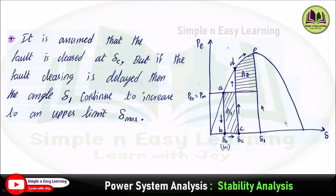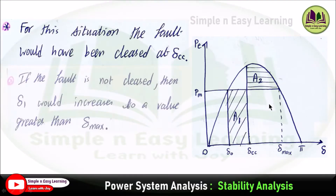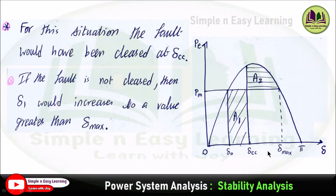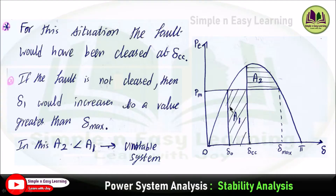If the fault clearing is delayed, the angle del_1 continues to increase to an upper limit called del_max. This means area A2 is increasing and the system becomes unstable. The fault should have been cleared at del_cc, but with the delay, del keeps increasing to del_max. Under this condition, area A2 is less than area A1, and the system is considered unstable.